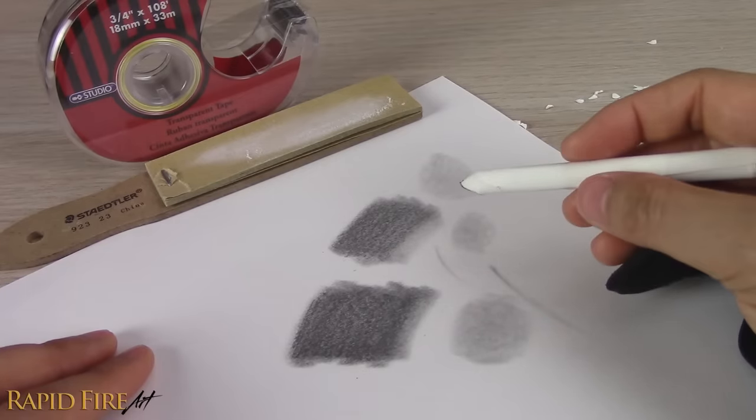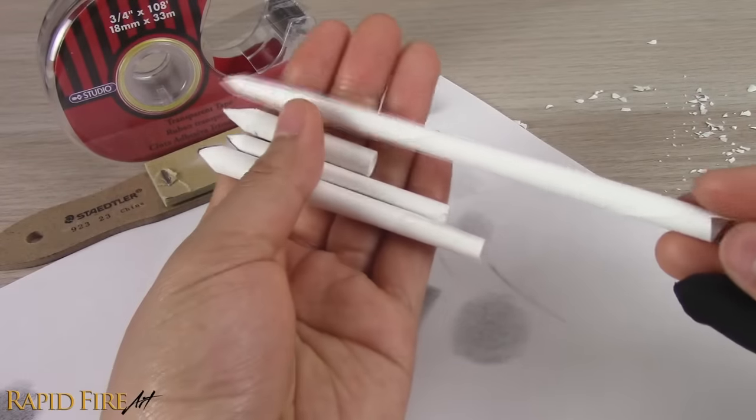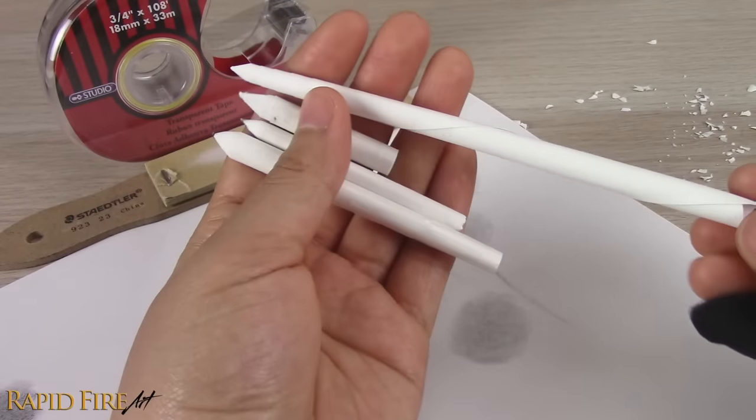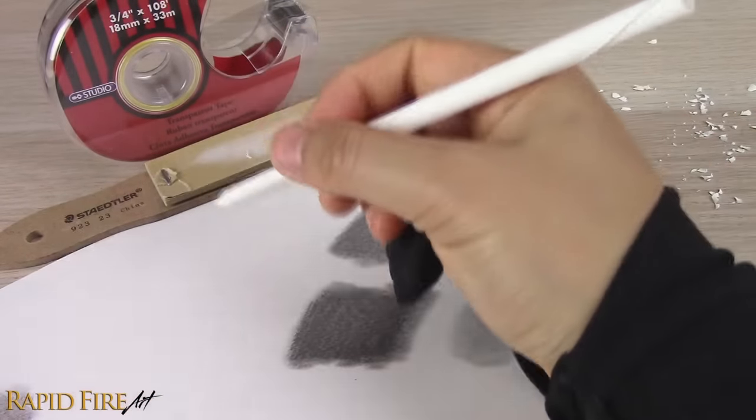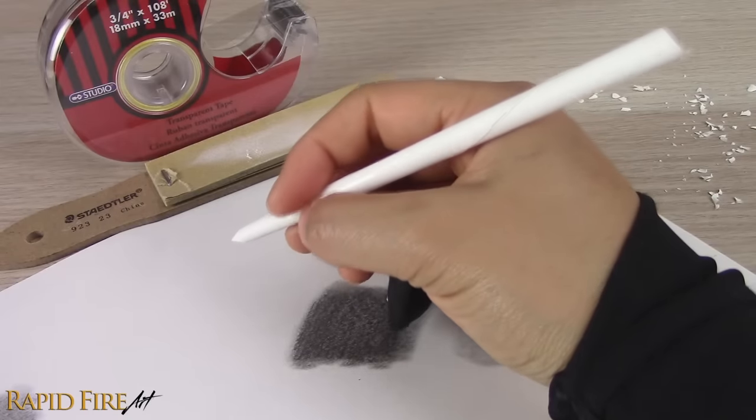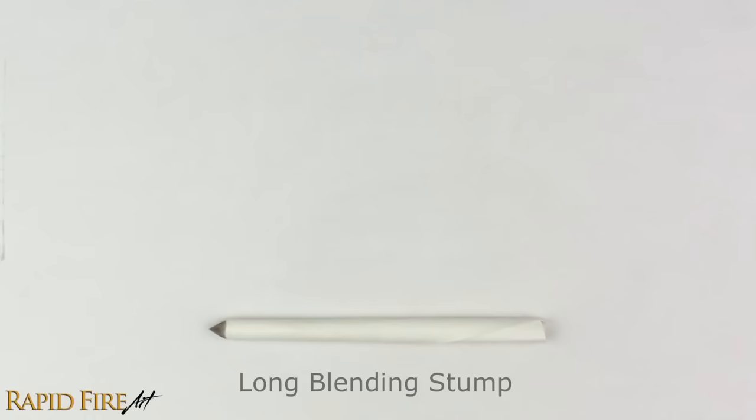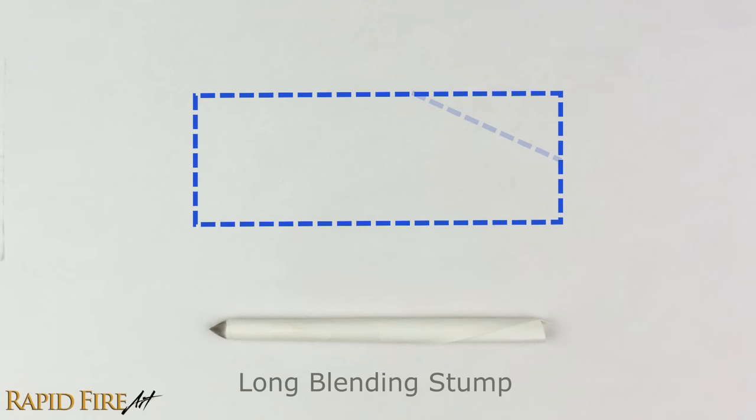Besides using different types of paper to make this, you can also customize your blending stump for increased coverage and comfortability. For example, this one's longer and much easier to hold, like a pencil. To make a long ergonomic blending stump like this, you'll need to extend the rectangle shape that you cut, so it's longer this way.